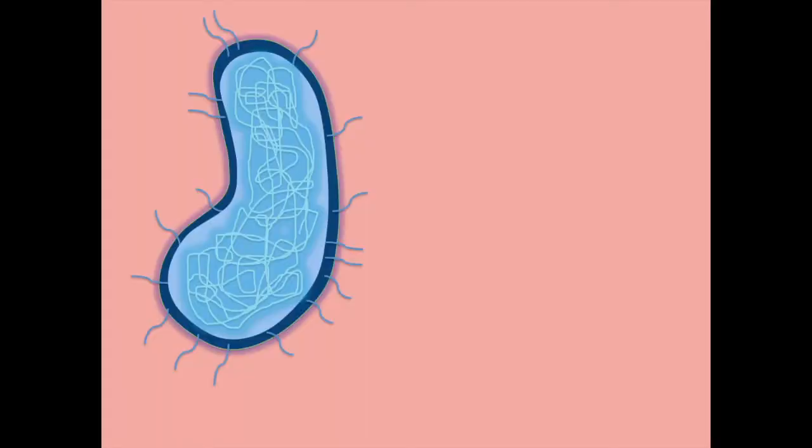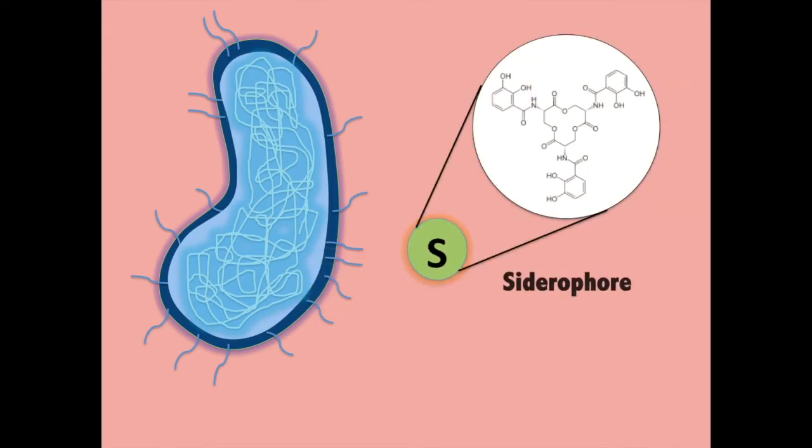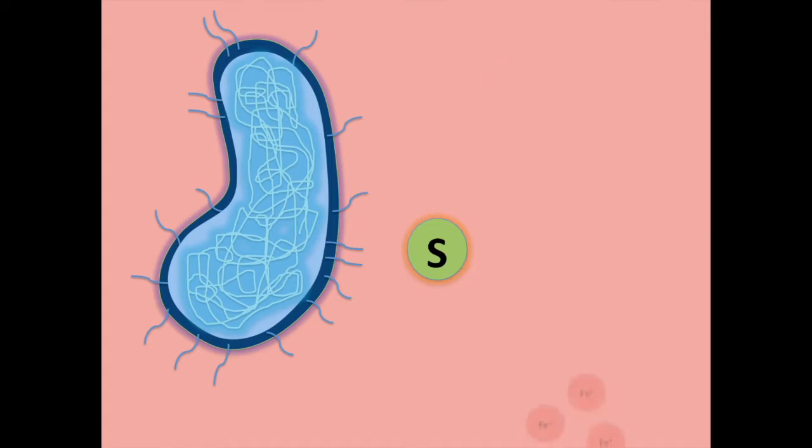Bacteria require iron to maintain homeostasis. To obtain iron, siderophores are secreted. Siderophores are small, high-affinity, iron-chelating compounds. Siderophores scavenge for iron ions in the nearby environment and bring them back to the cell.